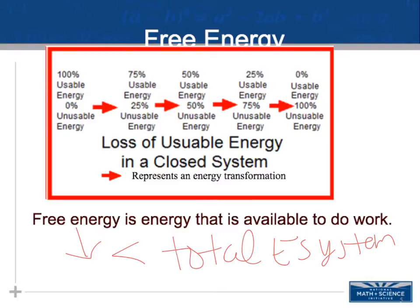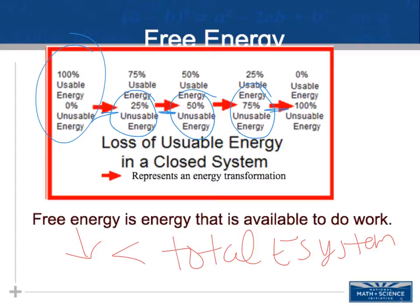Looking at this closed system diagram, it started with 100% usable energy and 0% unusable energy. Every time there was an energy transformation, chunks of it are lost as unusable energy, until eventually in a closed system — which does not exchange energy with its surroundings — you end up with zero usable energy, which does not work out well.